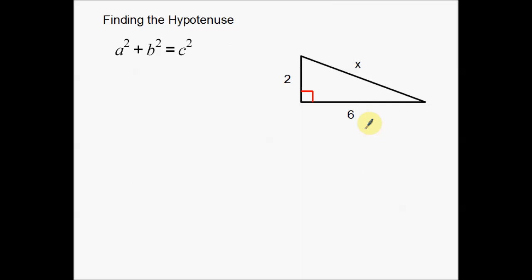This 2 and this 6 are my legs of my triangle, which makes x over here my hypotenuse. So what I'm going to do is plug them in. a is a leg, so we'll make that 2. So: 2 squared plus 6 squared is equal to x squared.